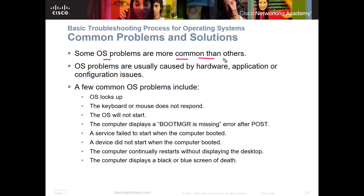Some operating system problems are more common than others. A recurring theme with Windows systems is: have you rebooted? Sometimes just rebooting solves the problem — for example, I rebooted my Android device this morning and it worked fine because it just needed to clear its cache and memory. Some OS problems can be caused by hardware, application, or configuration issues. Common problems include lockups, memory leaks — where a program uses RAM and doesn't return it to the OS — and the system freezing up.